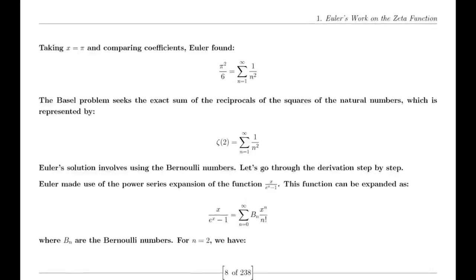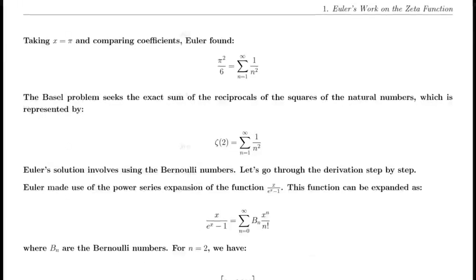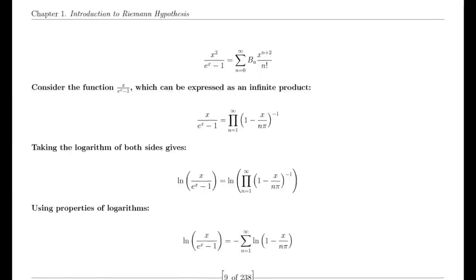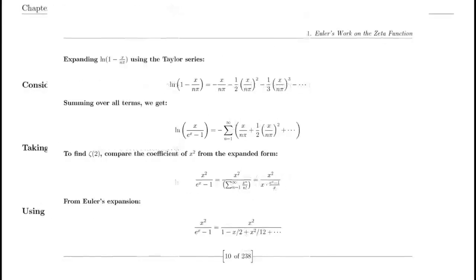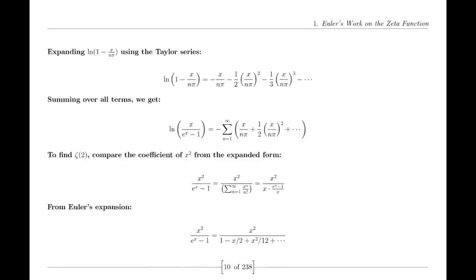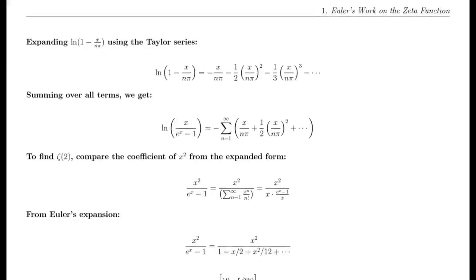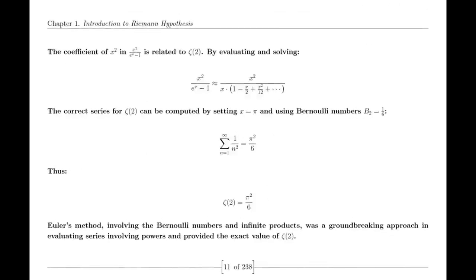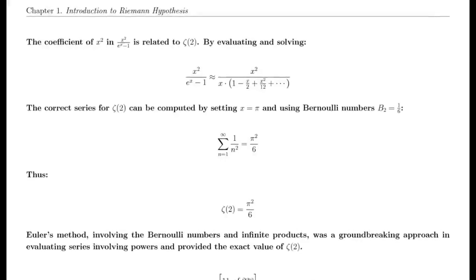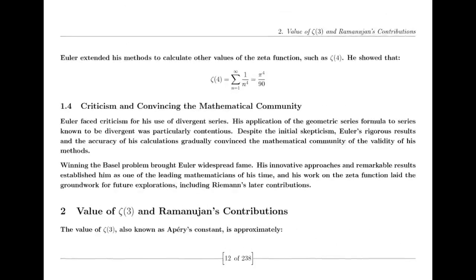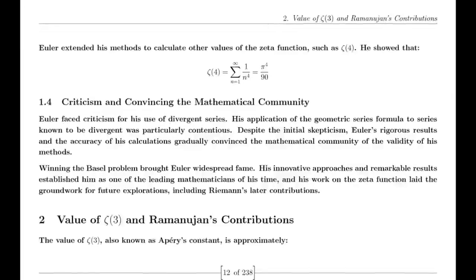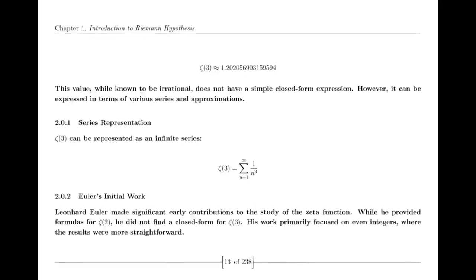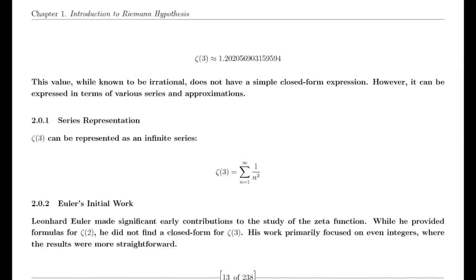The functional equation of the zeta function relates its values at s and 1-s through a complex expression involving pi, the gamma function, and trigonometric functions. This equation is a key result in the theory of the zeta function, showcasing its symmetry and the deep relationships between different mathematical concepts. In 1859, Riemann published his seminal paper on the distribution of prime numbers, which introduced the zeta function and laid the groundwork for modern analytic number theory.